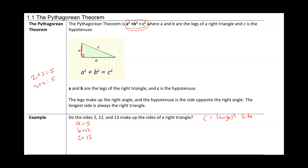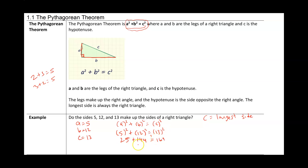If this is a right triangle, then a squared plus b squared would equal c squared. Plugging in: 5 squared plus 12 squared equals 13 squared, which gives us 25 plus 144 equals 169. Adding those up, we do get 169 equals 169. Since that is a true statement, yes, these are the sides of a right triangle.